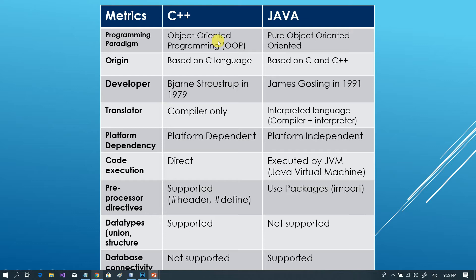Inheritance and polymorphism in C++ are not the same as in Java. C++ is an object oriented programming language, but Java is a pure object oriented language.